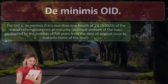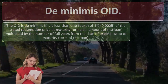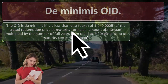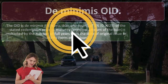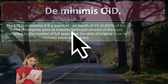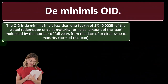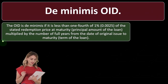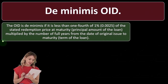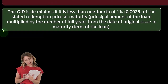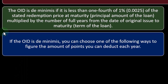De minimis OID. The OID is de minimis if it is less than one-fourth of 1% (0.0025) of the stated redemption price at maturity — the principal amount of the loan — multiplied by the number of full years from the date of original issue to maturity, which is the term of the loan.